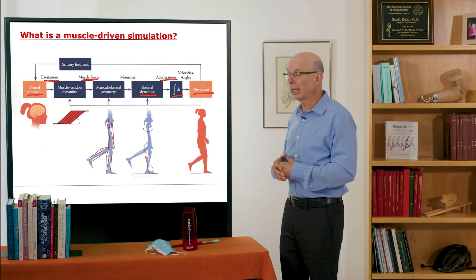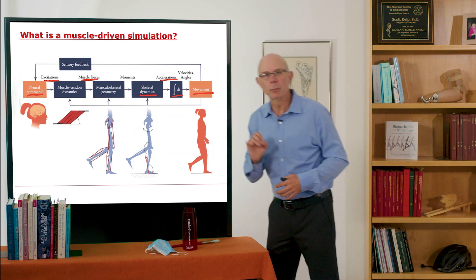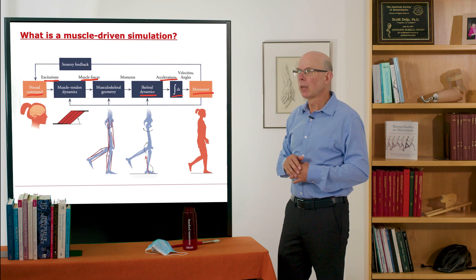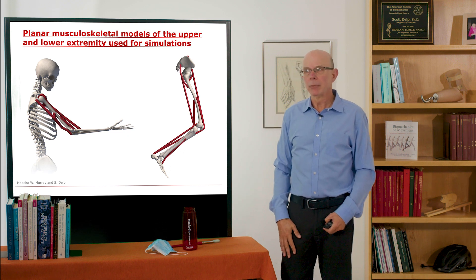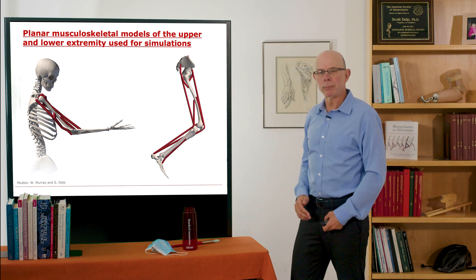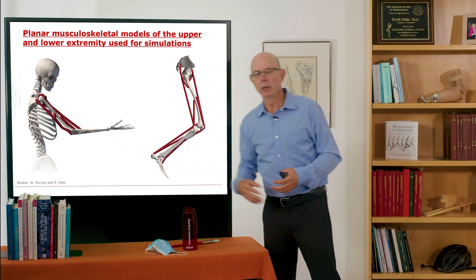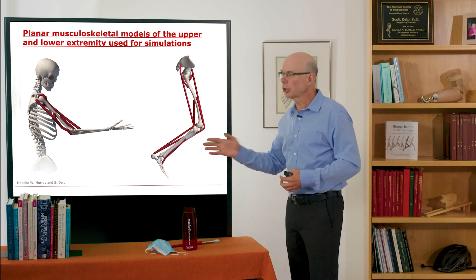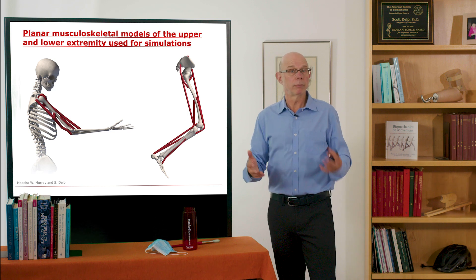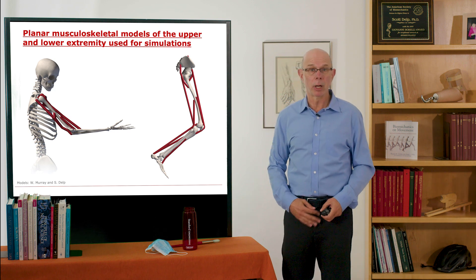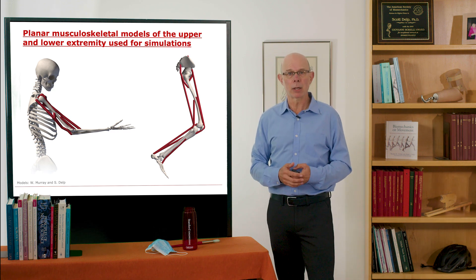In a muscle driven simulation, we represent all of these features, and the key problem is computing what those muscle excitations are. To create a muscle driven simulation, we need a model of the musculoskeletal system. In some cases we'll use a planar model, so it's a two-dimensional model. What I'm showing here is a simple planar model of the upper extremity and a planar model with just a few muscles of the lower extremity. We frequently use these when we're analyzing a problem that only requires a simple model. The simplest model that can give you the insight you need is the kind of model that you want to use.